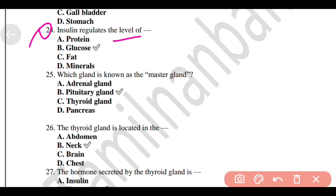Insulin regulates the level of Option B, Glucose. Which gland is known as the master gland? Option B, Pituitary gland.